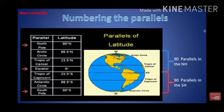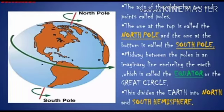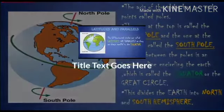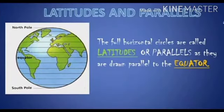It passes through the center of the Earth and makes no angle with it. The area falling north of the equator is called the Northern Hemisphere, and the area falling south of the equator is called the Southern Hemisphere.